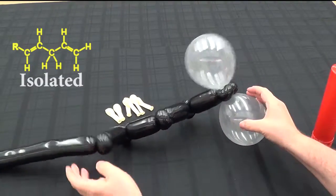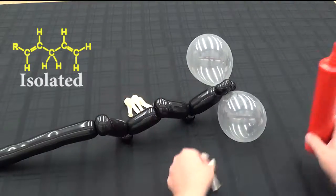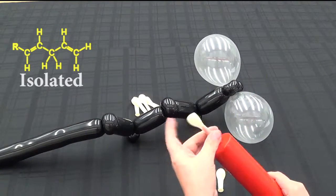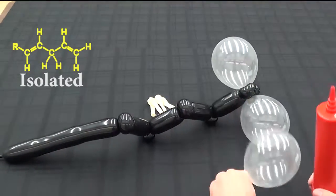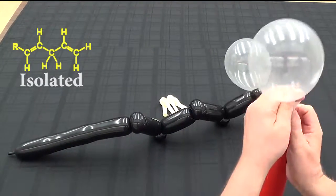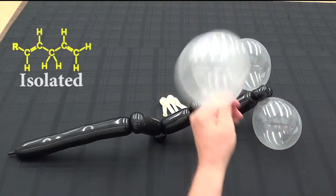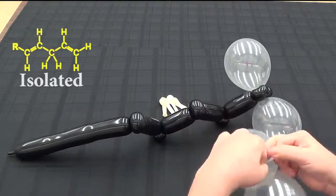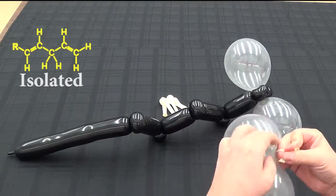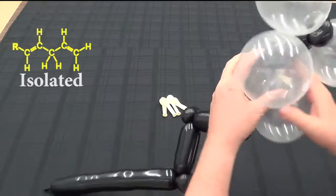We're going to make an isolated system first. So we're going to take two more balloons. Three pumps of air in each. And the second one. And again, we'll tie those together. And put those at carbon position number two.